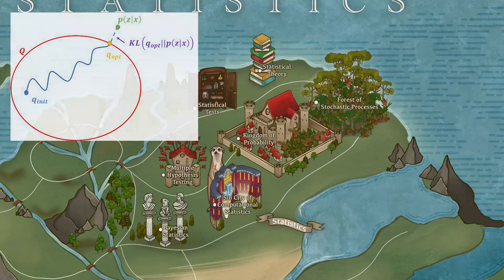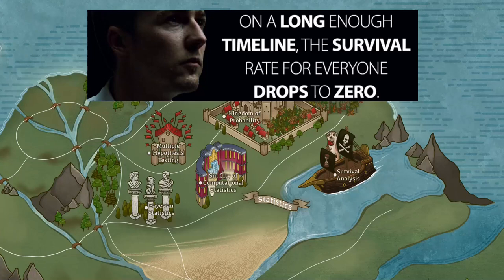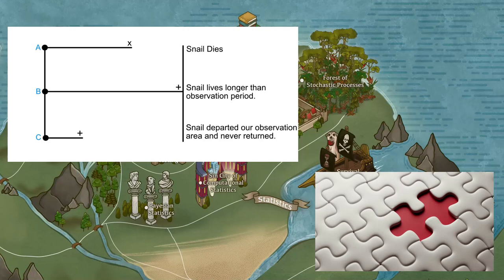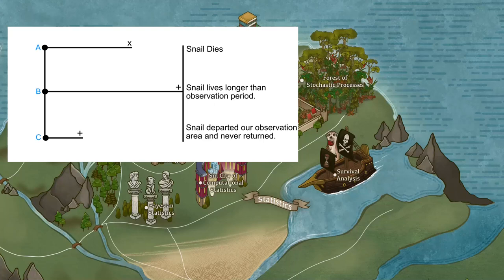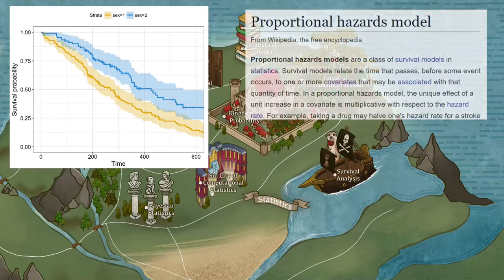Survival analysis, or time-to-event analysis, concerns with scenarios where we are interested in a non-negative quantity, like the time until death or time until some event. A major complication is censoring — incomplete data that still conveys information. For example, by the time our study ends, not everyone will have experienced the event. We do know they survived at least until the last time we checked, and this information can be integrated into the analysis. The most known tools are the non-parametric Kaplan-Meier curves and the semi-parametric Cox proportional hazard regression.